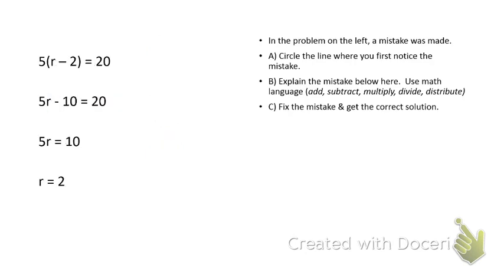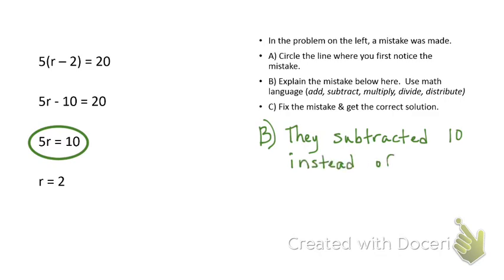Let's do another problem like this where they give you a problem and a solution on the left side and the same instructions on the right. So I'm going to look at the problem. And there was a mistake made. In the first step the problem. In the second line they were supposed to distribute. So 5 times r would be 5r. 5 times a negative 2 would be negative 10 equals 20. So the second line is correct in this. The third line is where I see the mistake. Let's explain the mistake. They subtracted 10 instead of adding it. Well that makes sense.